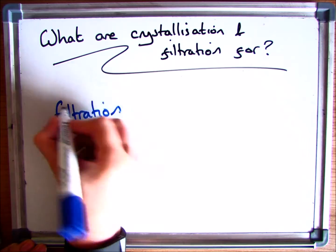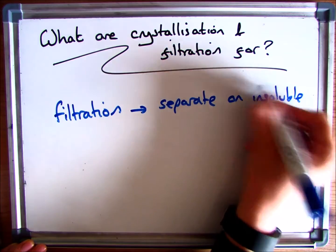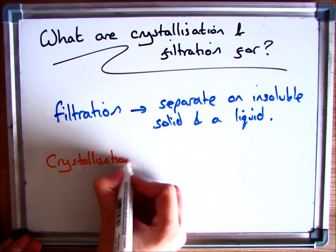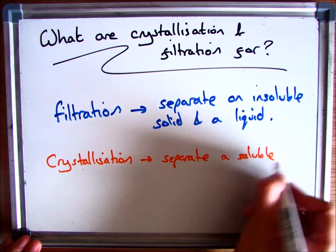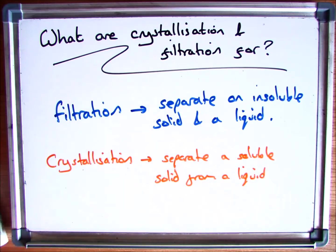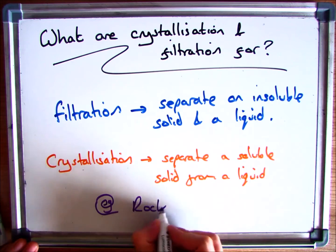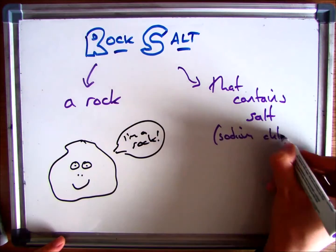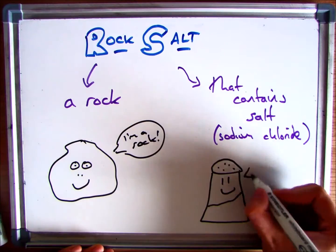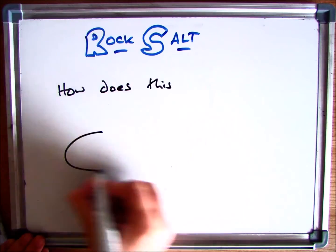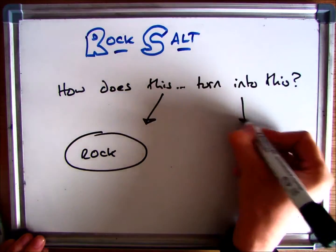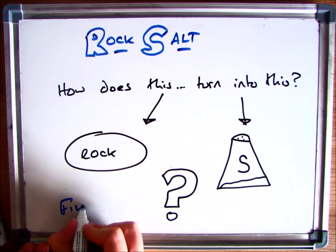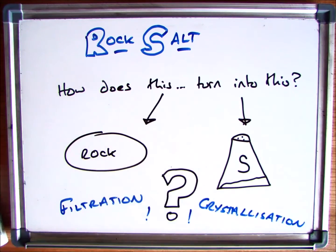Now we've gone through the key words. The next phase is what is crystallisation and filtration for and where does it come in handy in science. Filtration, your key definition, is to separate an insoluble solid and a liquid, and crystallisation is to separate a soluble solid and a liquid. A key example of where both of this occurs is when you try to get salt from rock salt. So rock salt is a rock that contains a salt. The question is how do you get from that rock salt to actual table salt that we can put on our fish and chips. The answer to that is using those two key techniques we've spoken about, filtration and crystallisation.